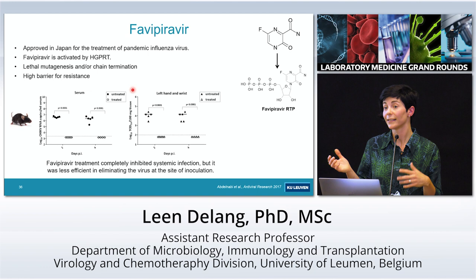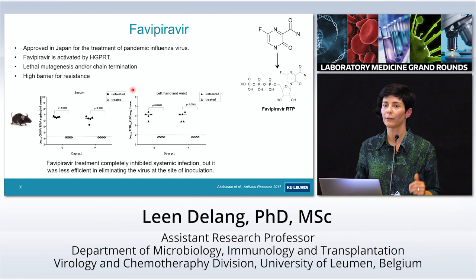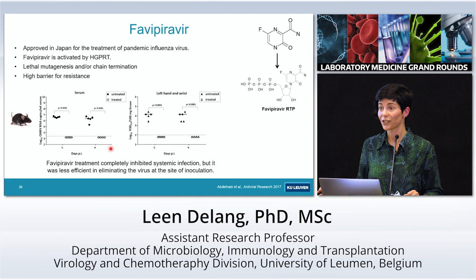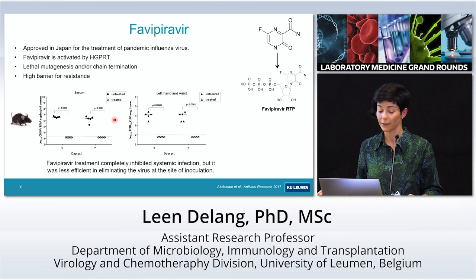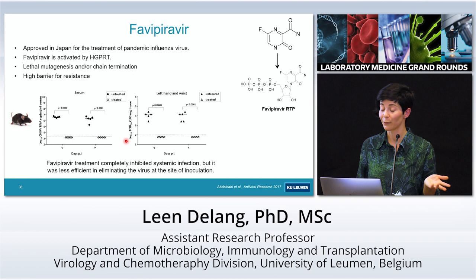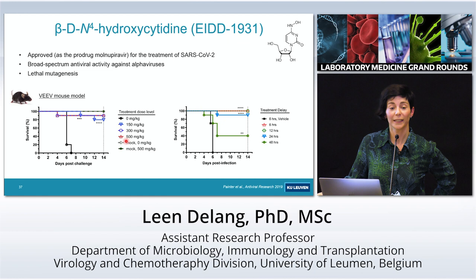Favipiravir has a high barrier to resistance — for influenza, resistant viruses were not easily selected in vitro or in treated patients. The same was found for chikungunya virus. Favipiravir doesn't only work for influenza but for a very broad group of viruses, and we showed in our lab that it works very nicely in our chikungunya virus mouse model — no virus replication in the hands, wrists, or serum of treated mice. This could be promising for several mosquito-borne virus infections.